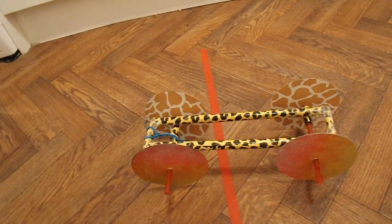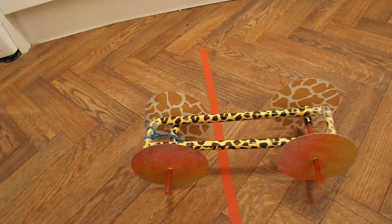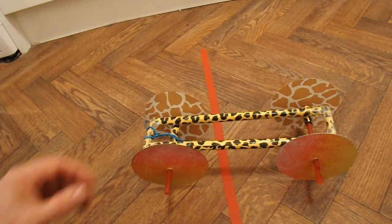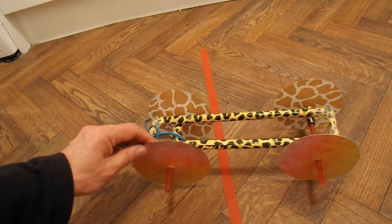Summary time. What have we got? We've got a car made from thin card. Or thick paper, whichever way you look at it.